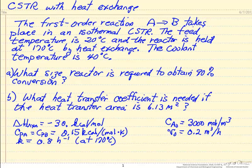So we have two questions. What's the size of the reactor in order to get 90 percent conversion at this temperature? And then what heat transfer coefficient will we need if the heat transfer area for this tank and the surrounding jacket is 6.13 square meters?